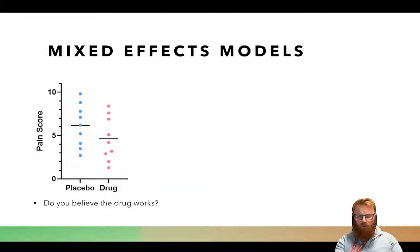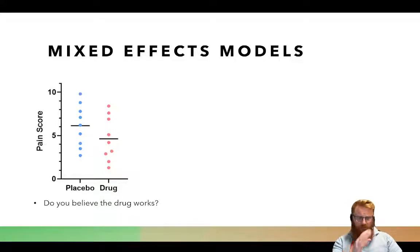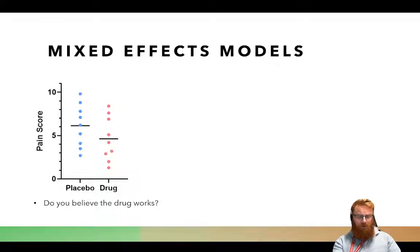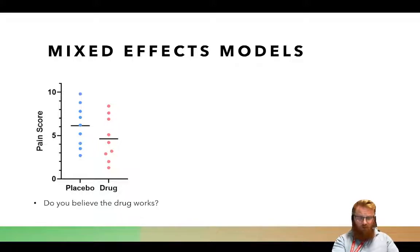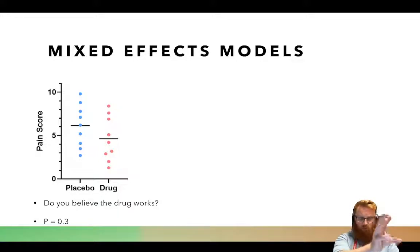Let's show why these models are useful. Say we've got a drug we think is going to be a painkiller. We give it to people and get these data sets. Do you believe the drug works? If we just do a t-test, we get P equals 0.03. Under the assumption that these are all independent data points — we have about 9 in each group — we've got 9 people tested in the placebo condition and 9 in the drug condition. We get P equals 0.03, which is not very convincing.